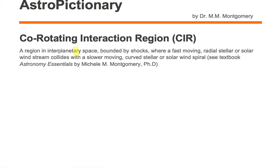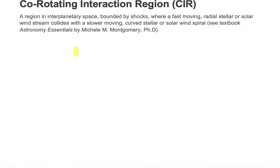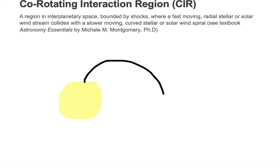Let's draw this out here. So let's start with our Sun or a star, and this Sun or star emits a spiral wave of solar wind, so it forms this curved shape.